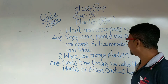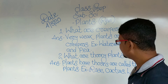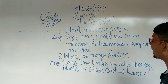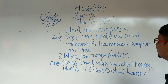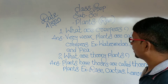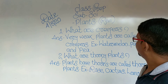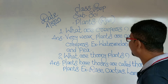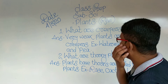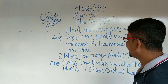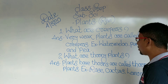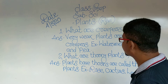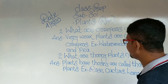Example: watermelon, pumpkin, and pea. Question number two: What are thorny plants? Spelling: W-H-A-T. What are thorny plants? T-H-O-R-N-Y. Thorny plants.